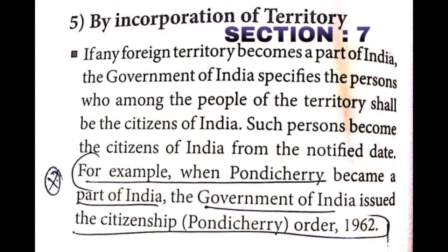Acquisition of citizenship by Incorporation of Territory, Section 7. If any foreign territory becomes a part of India — for example, Pondicherry — the government of India specifies which among the people of that territory shall be citizens of India. Such persons become citizens of India from the notified date. For example, when Pondicherry became a part of India, the government issued the Citizenship Pondicherry Order 1962.